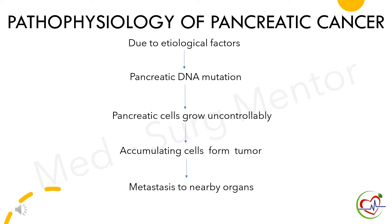Pathophysiology of pancreatic cancer: due to etiological factors, cells in the pancreas develop changes at the DNA level, which is called mutation. As a result, cells grow uncontrollably and accumulate to form a tumor. If left untreated, pancreatic cancer cells spread to nearby organs and blood vessels, resulting in further complications.